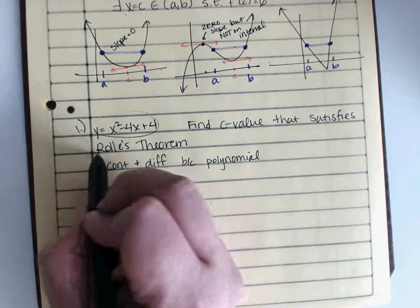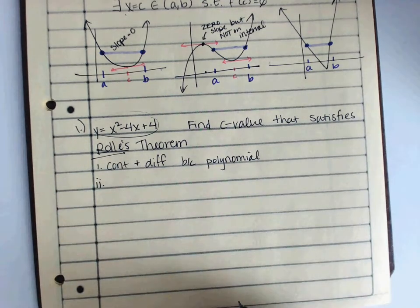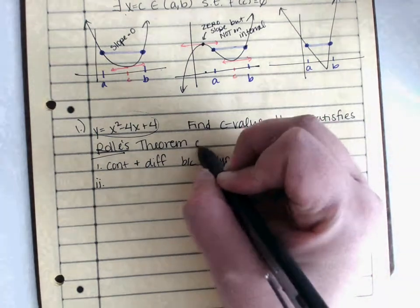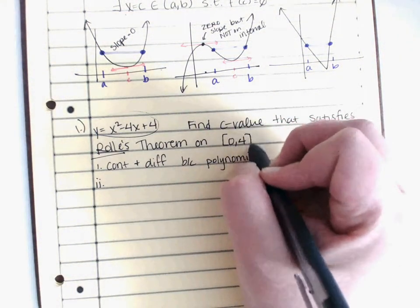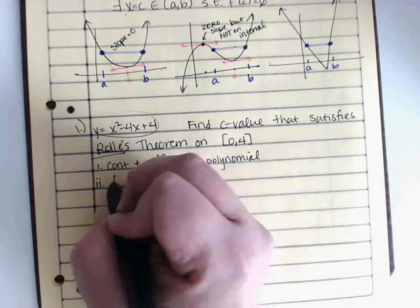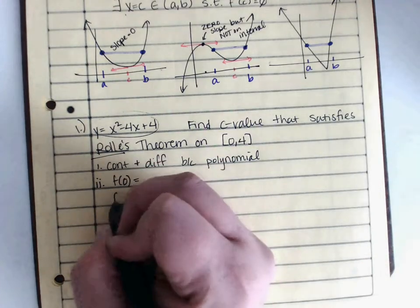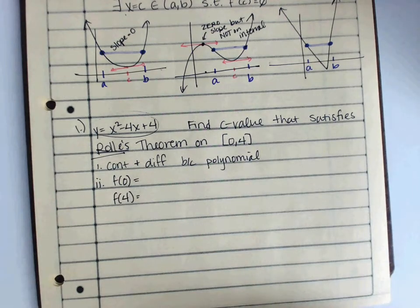Step two. For Rolle's Theorem, rather than finding the average rate of change, I'm just going to show that my endpoints are the same. And, oops, I forgot to give you the interval. It's from 0 to 4. So, I need to find f(0), I need to find f(4), I need to show that they match each other.